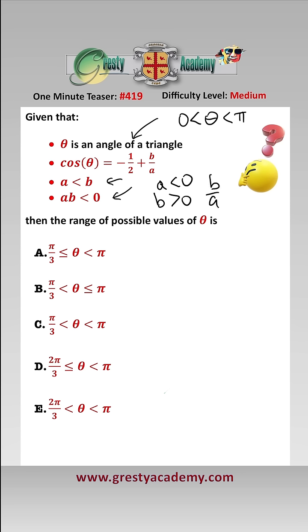Therefore we know that b over a must be less than 0 and can't be 0 because ab is less than 0. And therefore from this, we have that cos of theta must be less than minus a half because we know this is negative. And we know that cos theta must be by definition greater than minus 1.